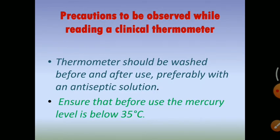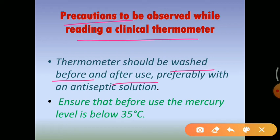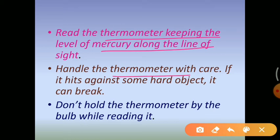The clinical thermometer is a very useful but delicate device, so we have to take some precautions. First, wash it before and after use. Second, check that the temperature inside the bulb should be below 35 degrees Celsius before use. Third, read the thermometer keeping the level of mercury along your line of sight so that you can read the accurate value clearly.